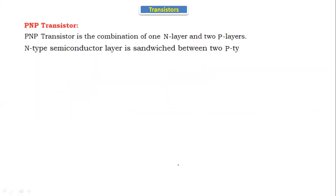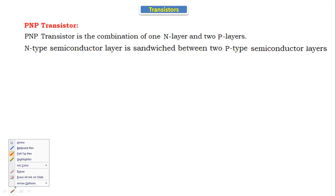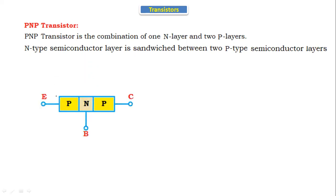Now we will discuss the PNP transistor. The PNP transistor is a combination of one N layer and two P layers. The N-type semiconductor layer is sandwiched between two P-type layers. If you see the symbol of the PNP transistor, it is a combination of two P layers and one N layer.